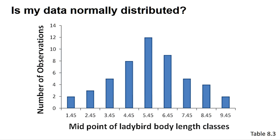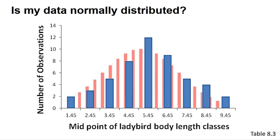One common approach can be illustrated using the data from Table 8.3, shown in the bar chart. We can calculate a mean and standard deviation from this data, and then predict the distribution of values we should get if the data is normal, as we can see from the underlayed bar chart in pink. We can then perform a chi-squared or similar test to see if our values are consistent with those expected values. This generates a probability, and if it is below 0.05, we can state the observed and expected data are significantly different, and that our data is not normal. How to do this chi-squared test is detailed in the book.